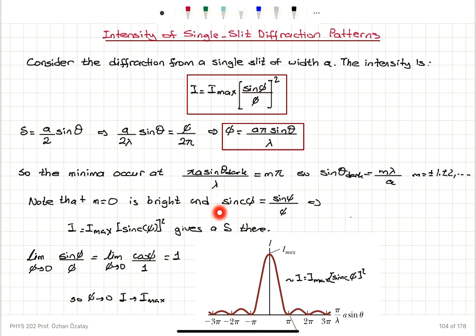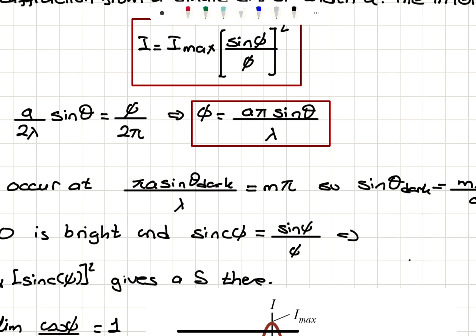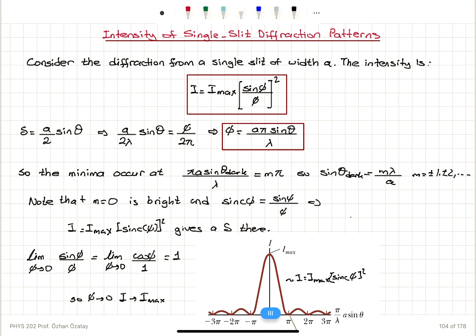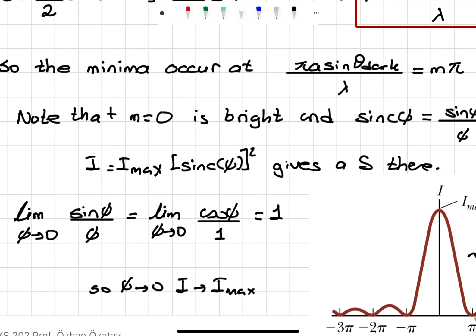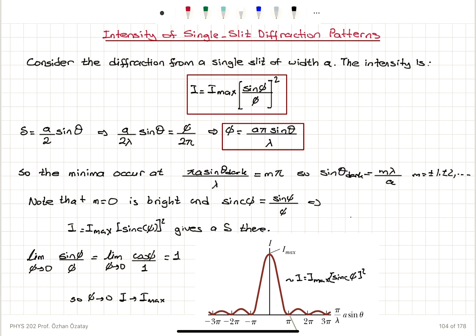m = 0 is bright. The function sinφ / φ, which is called the sinc function, behaves as φ goes to 0 as follows: taking the limit as φ → 0 of sinφ / φ, using L'Hôpital's rule we take the derivative of the top — cosφ — over the derivative of the bottom — 1 — and cosine 0 is 1. So we see that the intensity becomes maximum. The sinc function squared multiplied by I_max is the intensity distribution.